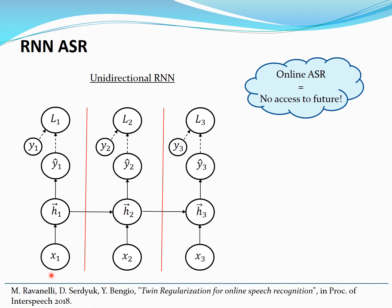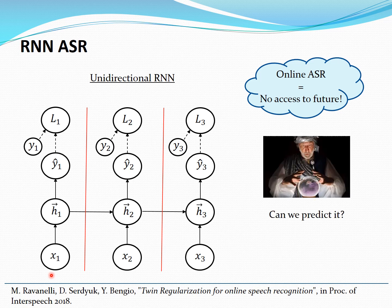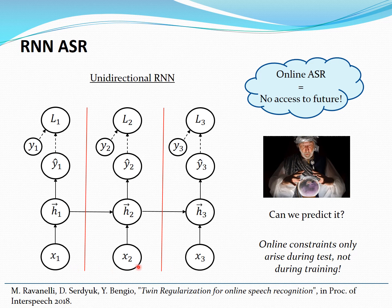Why don't we have access to the future? Because we would like to start processing our sequence while acquiring it, in order to avoid latency. So for online speech recognition only unidirectional recurrent neural networks can be used. An important remark is that the online constraint actually arises only during test time — during training we can have access to the full sequence.